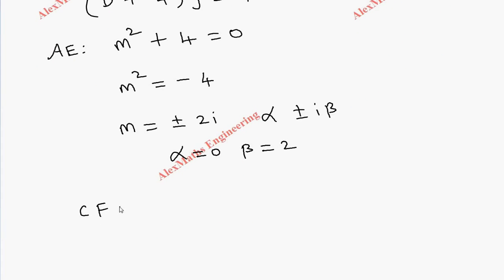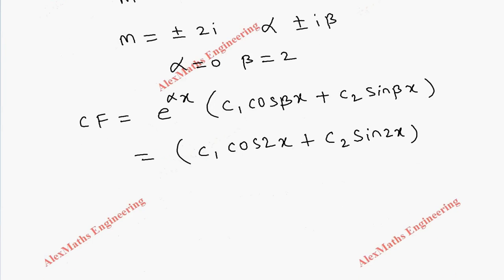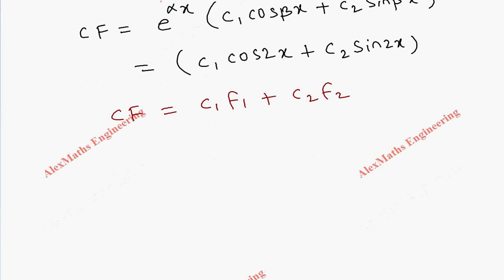The complementary function is e^(αx) · (c₁ cos βx + c₂ sin βx). Since e^(0·x) = 1, we write c₁ cos(2x) + c₂ sin(2x). Comparing with the general form c₁f₁ + c₂f₂, we get f₁ = cos(2x) and f₂ = sin(2x).